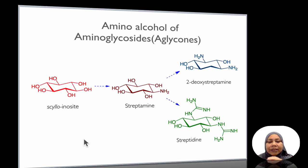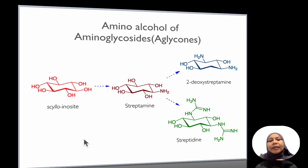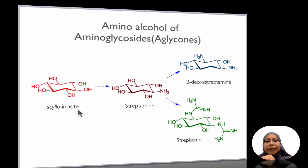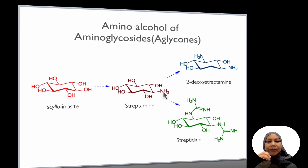In the case of aminoglycosides, the structure has a central aglycone, and the origin of the aglycone comes from cyclitols. To form streptamine, one of the OH groups is changed or modified to an amino group. This streptamine can be further modified to D-deoxy streptamine.